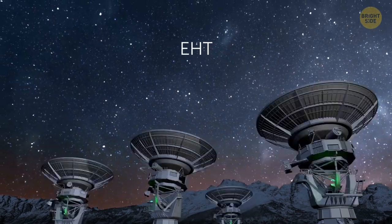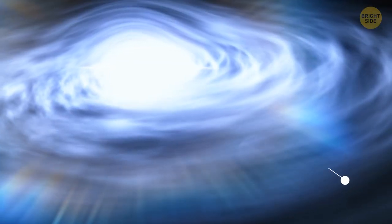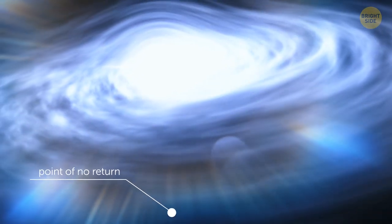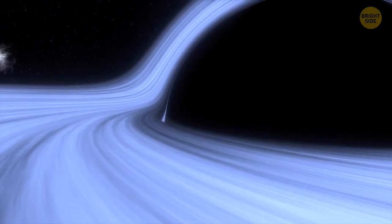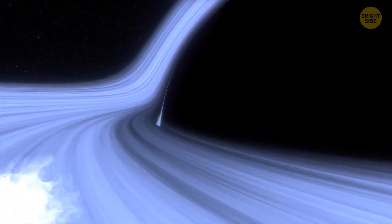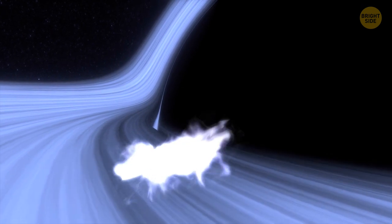Why such a name? The thing is that the event horizon is a point of no return on the outskirts of a black hole. When something, for example, matter, radiation, or light, reaches this boundary, there is no way for it to escape the black hole's clutches.